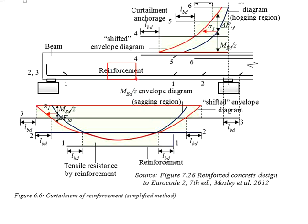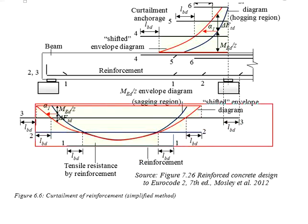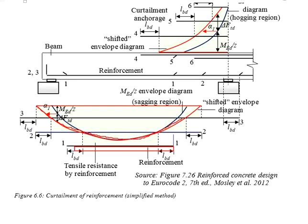If you maintain 100% reinforcement bar throughout the entire beam span, there are regions where certain reinforcement is not really necessary — this will cause wastage of material and may lead to congestion of reinforcement at the junction between beams and columns. Therefore you need to do the curtailment. The fundamental principle is that throughout the entire beam span there should be no area where your resistance is less than the required tensile force. At bare minimum, your resistance should be at least equivalent to what is required, taking into account the anchorage length requirements.